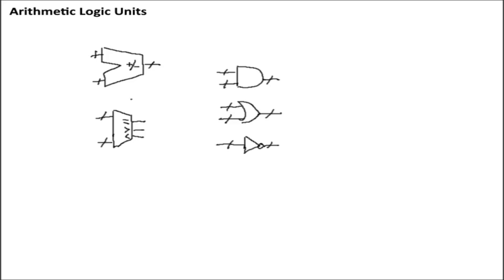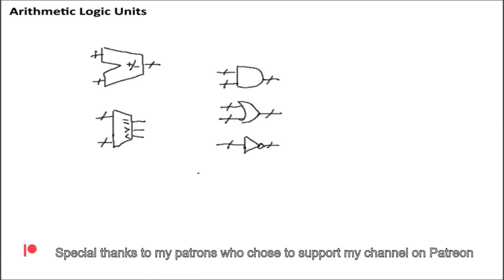So far we've discussed different combinational logic components that can perform different operations on sets of inputs — things like adders and subtractors, bitwise operations such as ANDs, ORs, NOTs, as well as digital comparison which can check for equality, greater than, or less than conditions. However, what if you wanted a single circuit that could perform all of these functions depending on a function input?